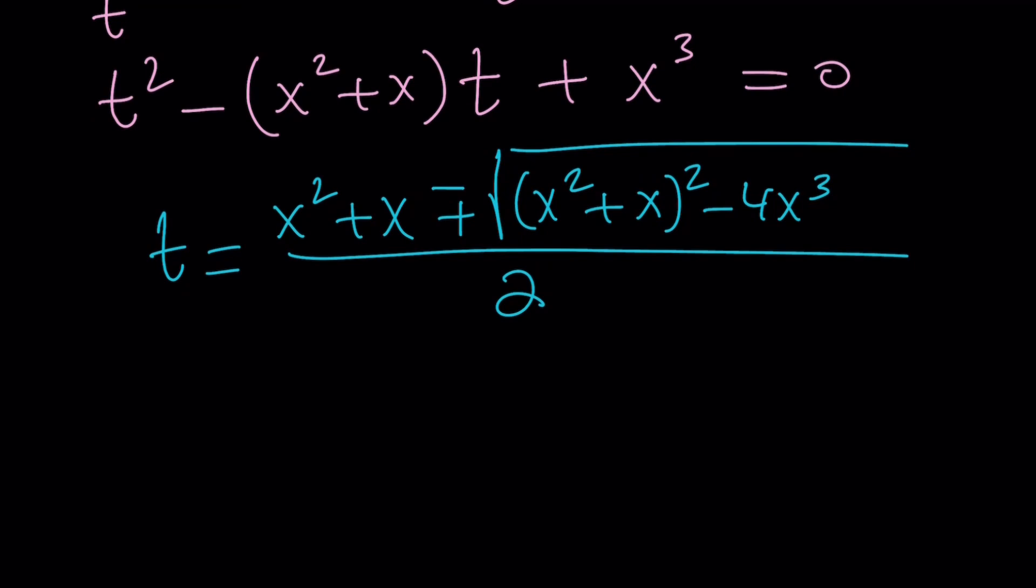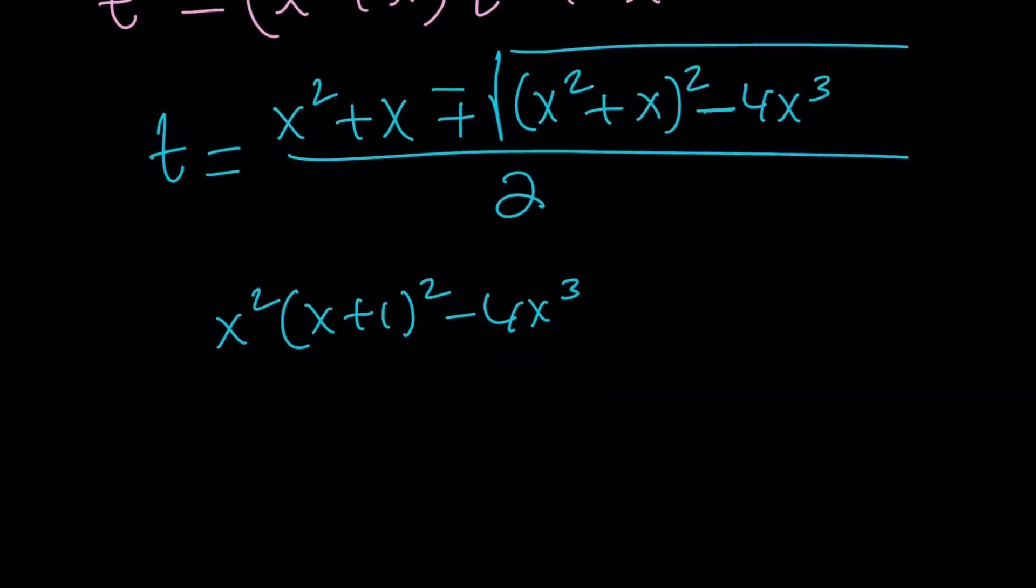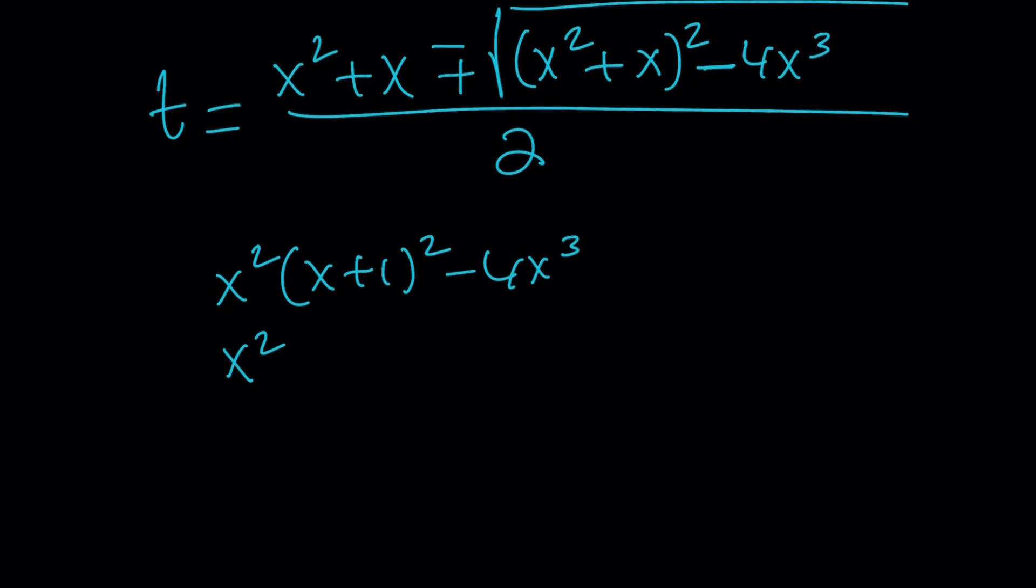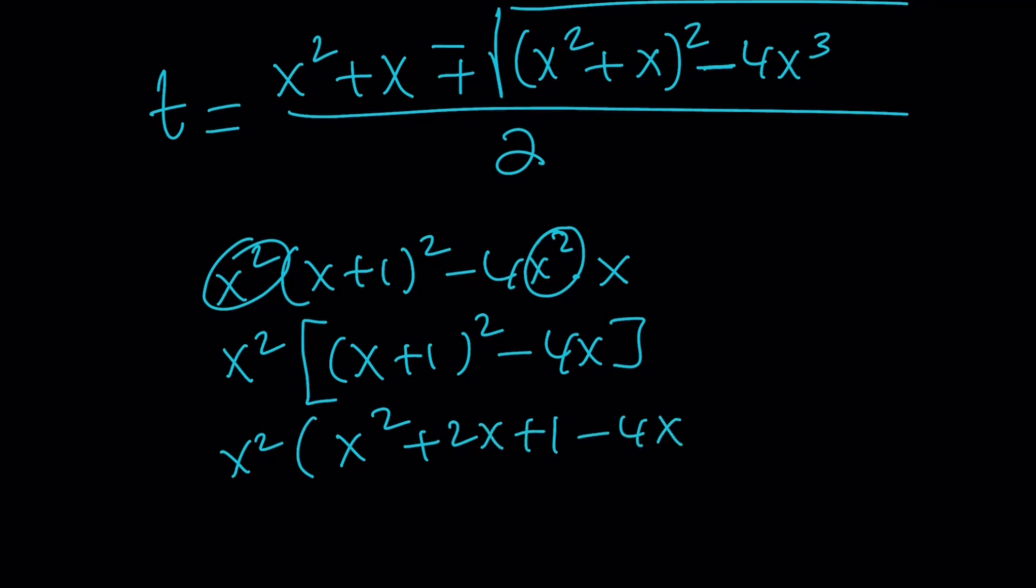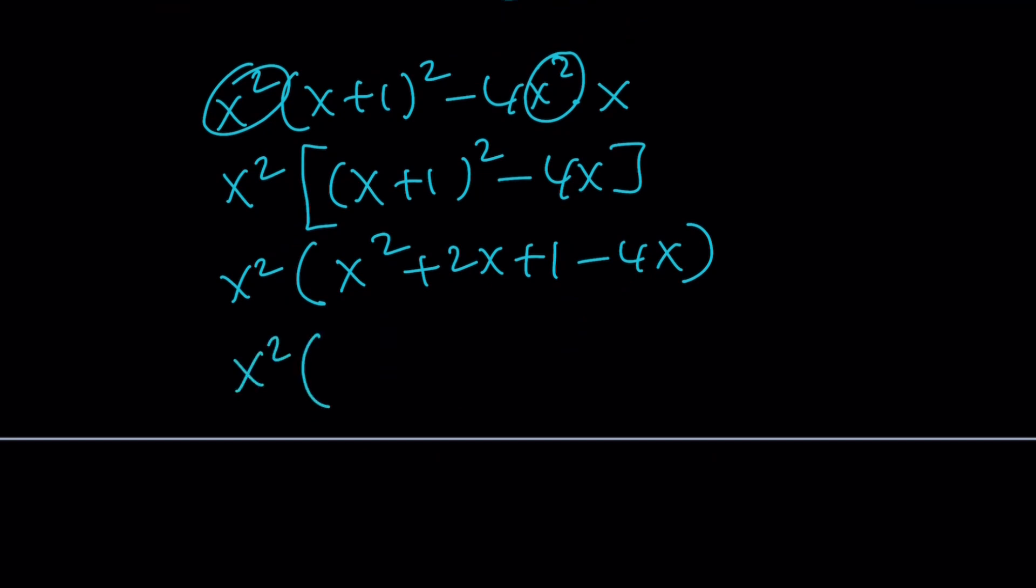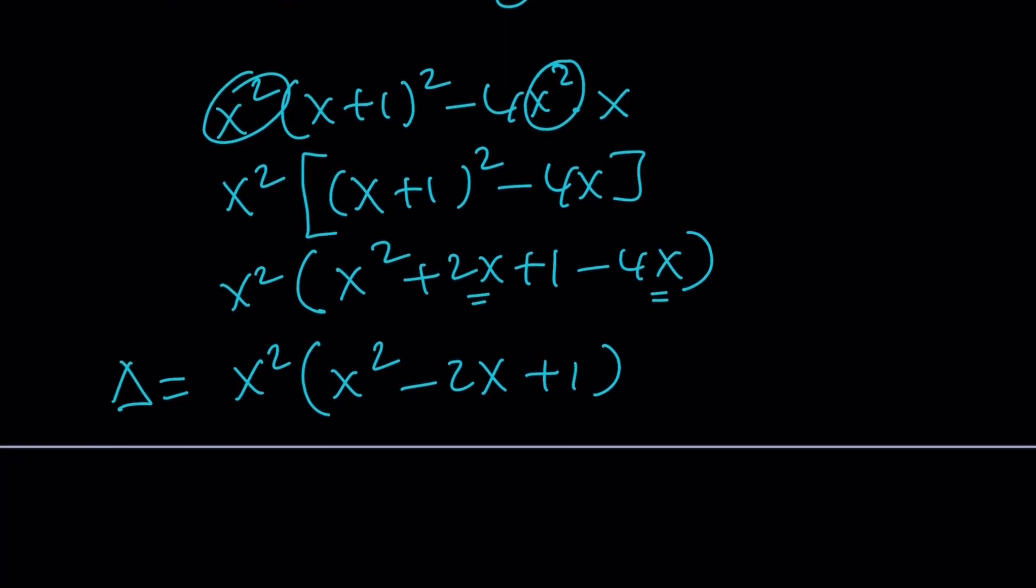Let's go ahead and simplify inside the radical first. What is x squared plus x squared? I can factor out an x and write this, and then subtract 4x cubed from it. And of course, this can be written as 4x squared times x. Now, x squared is a common factor. So we get x plus 1 squared minus 4x. And this is going to be x squared times x squared plus 2x plus 1 minus 4x. That's how I get my perfect square. Because 2x minus 4x is just going to be negative 2x. And yes, that is a perfect square.